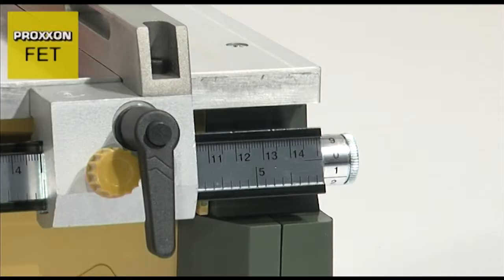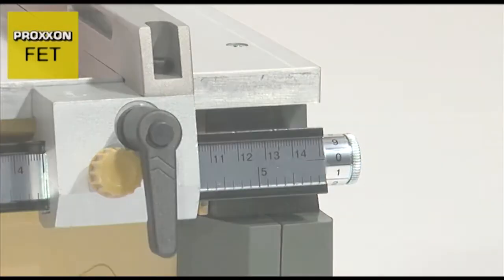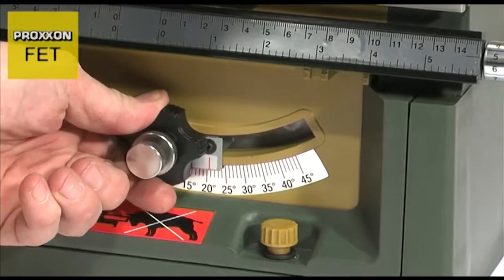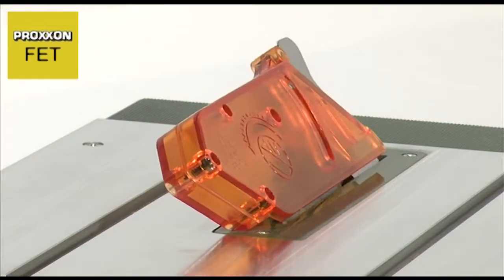And for very accurate work, the position of the longitudinal stop can be corrected by 1 tenth of a millimetre. When adjusted in conjunction with the saw blade inclination, the mitre fence even allows cutting of double mitres.